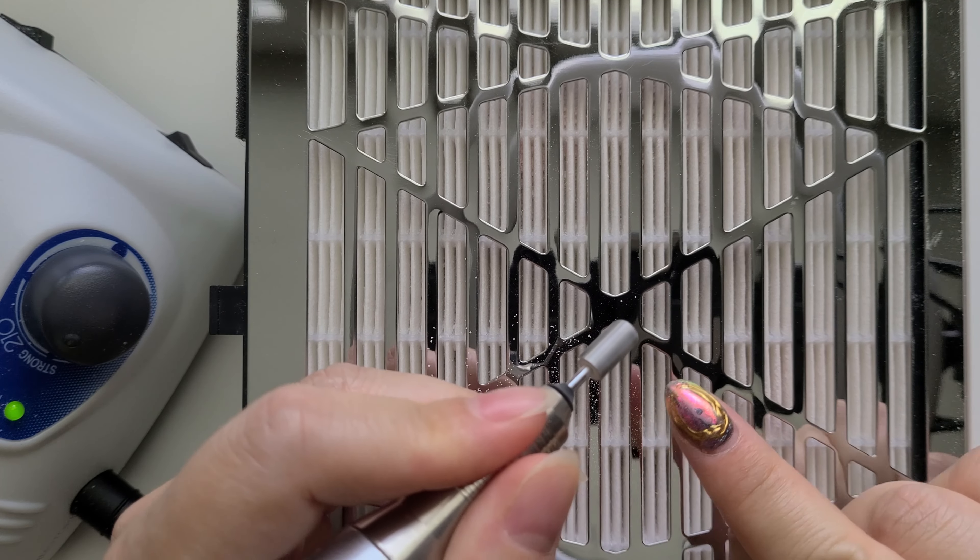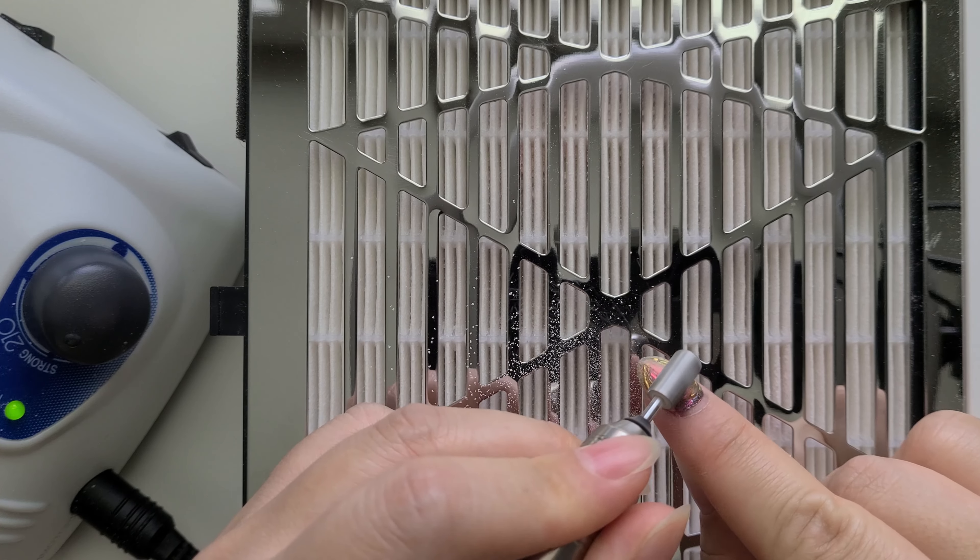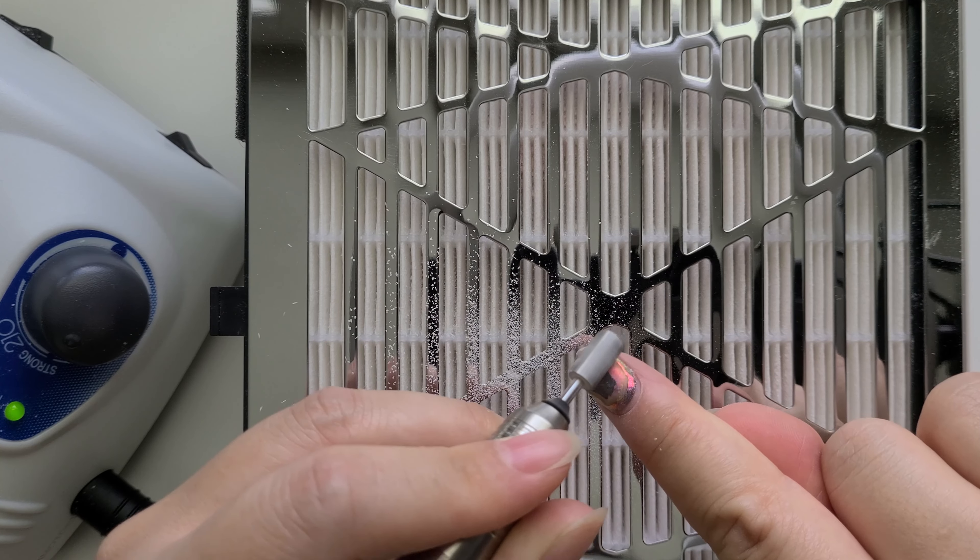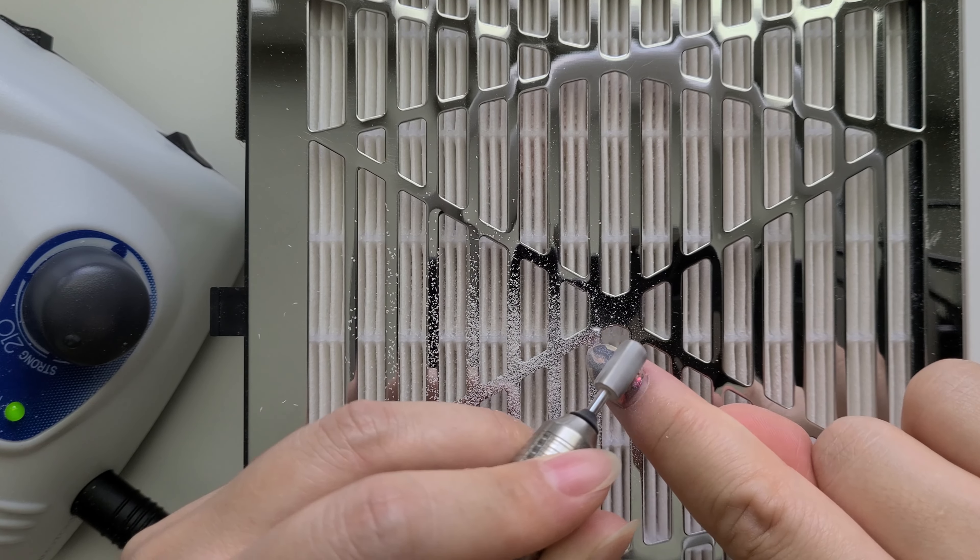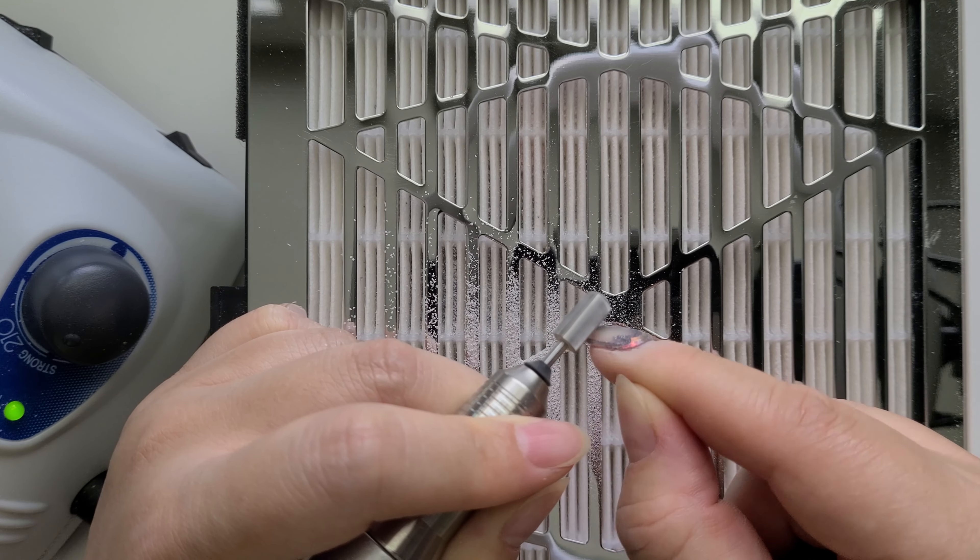Step one: take an extra coarse nail bit, or an extra extra coarse if you're very experienced, and file off the majority of the bulk.